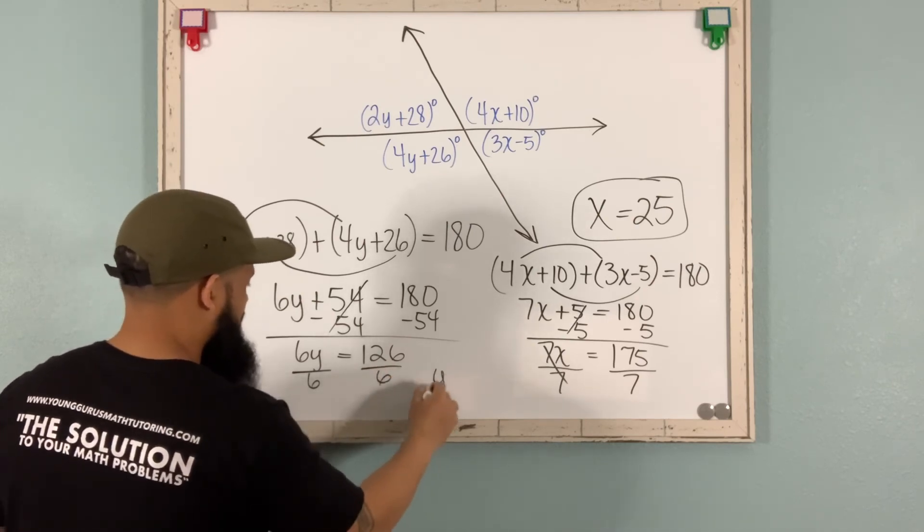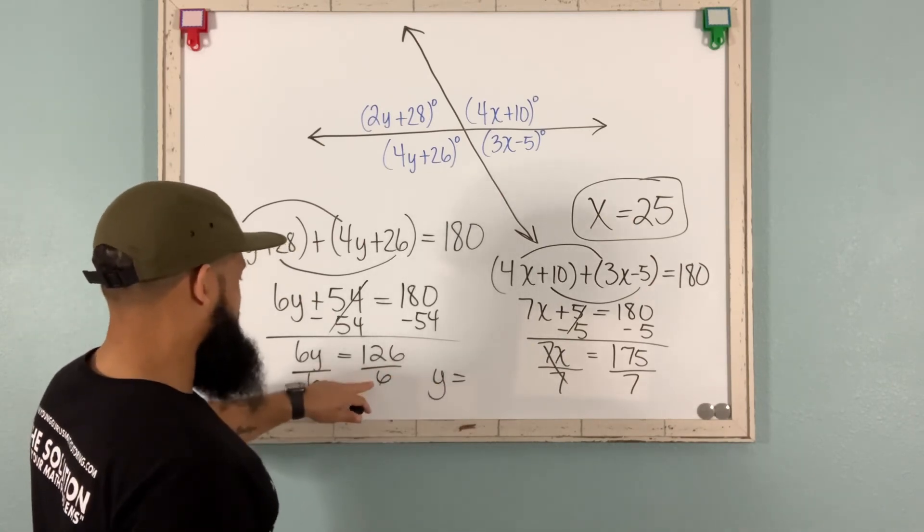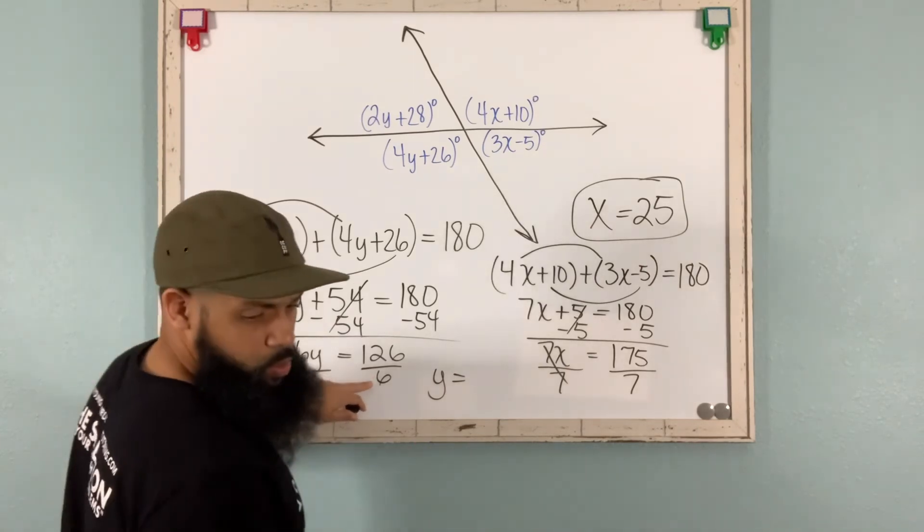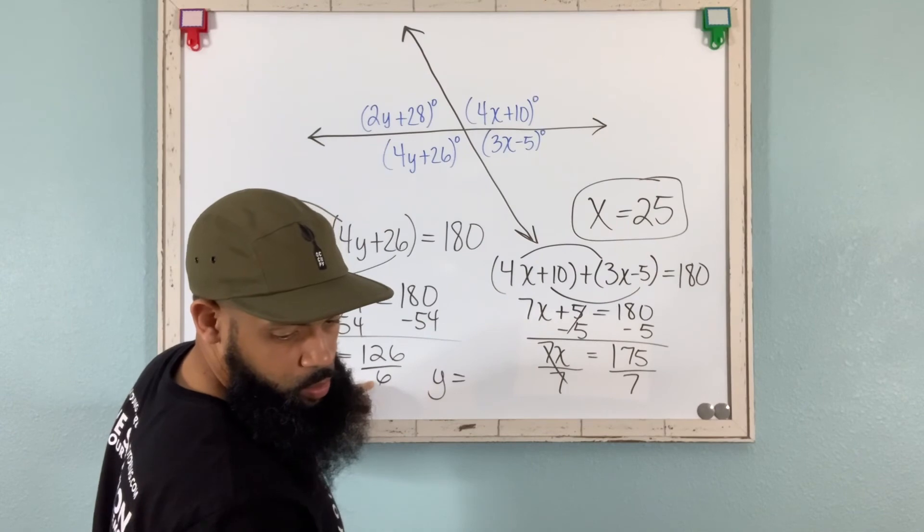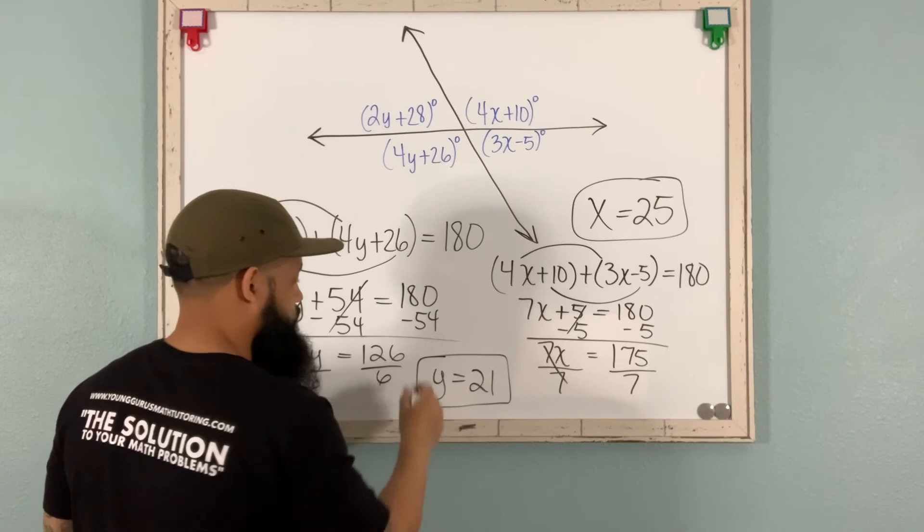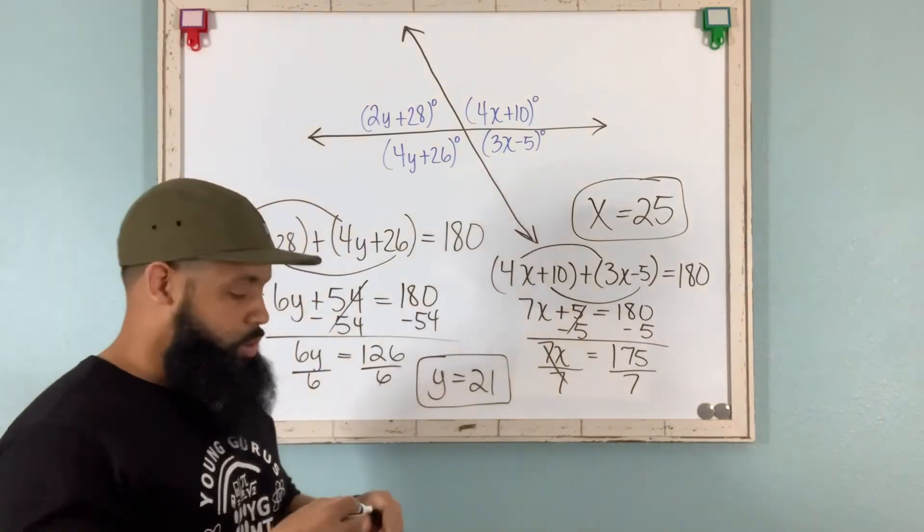I miscalculated for a second. 21. So once again, you can double check. You can substitute this back in. It's probably easier to substitute this.